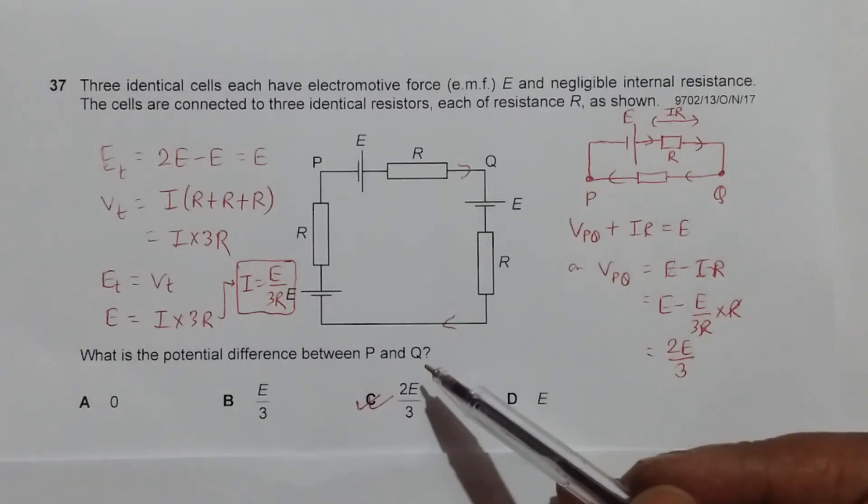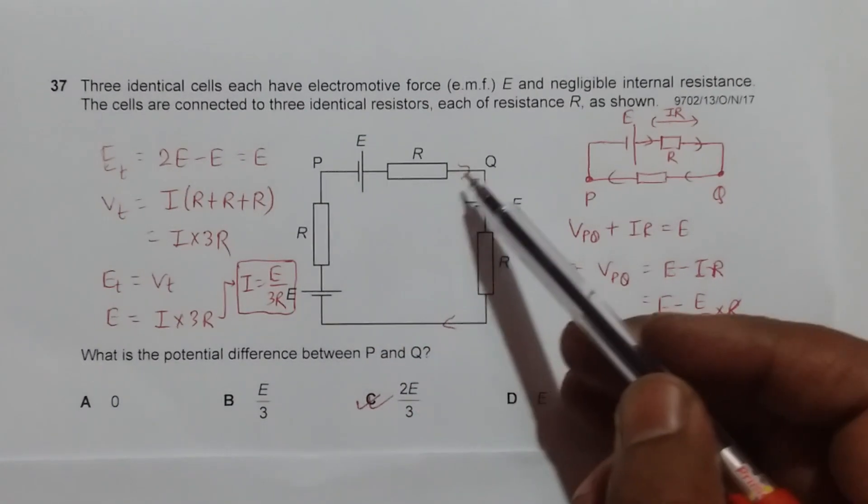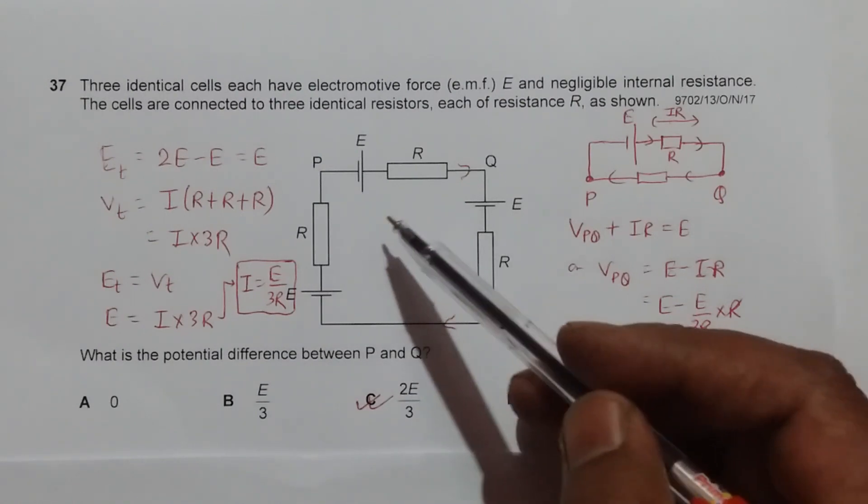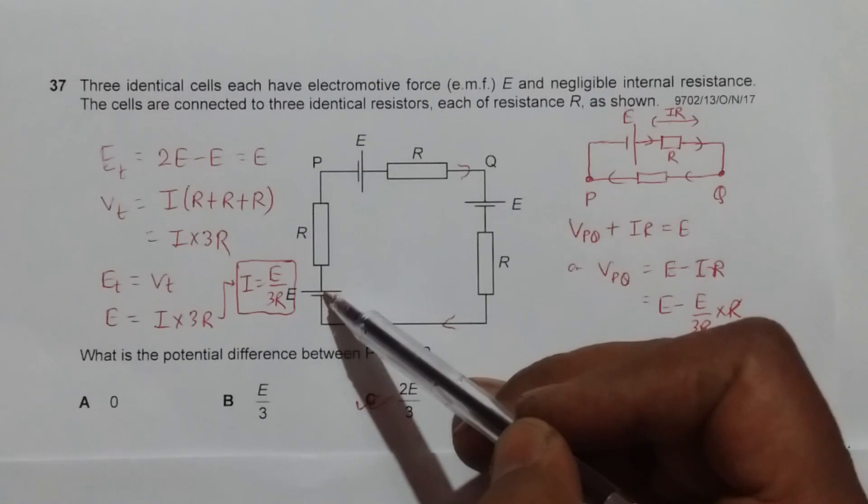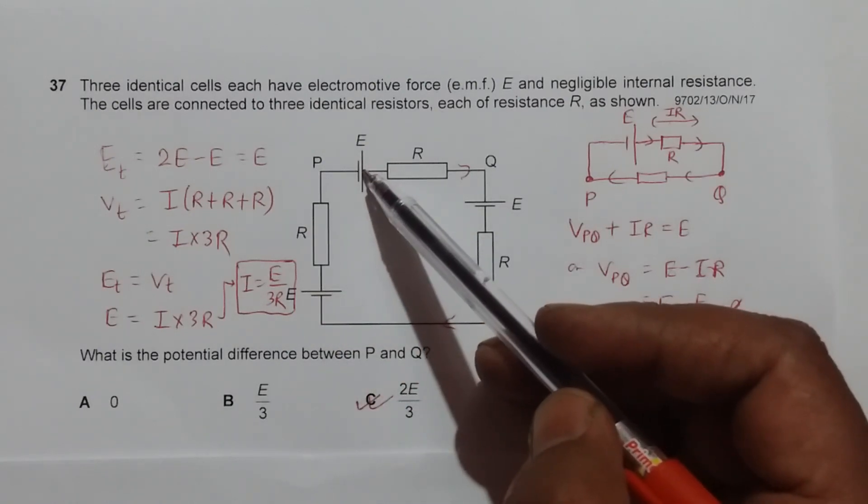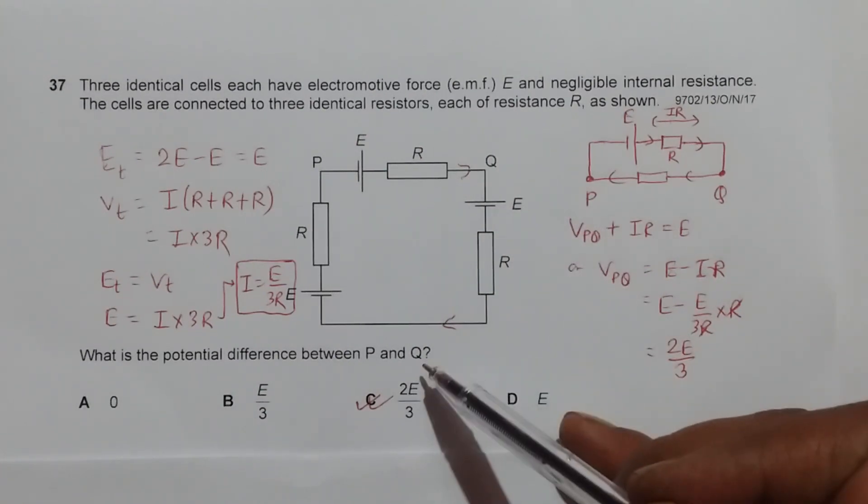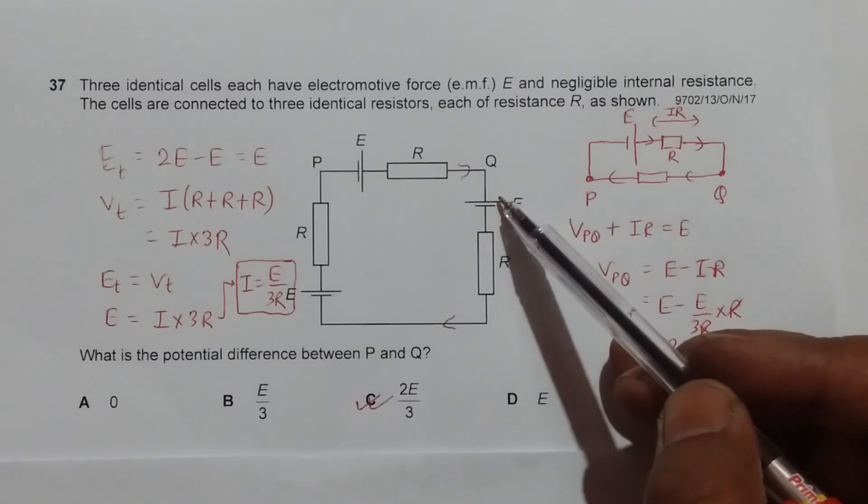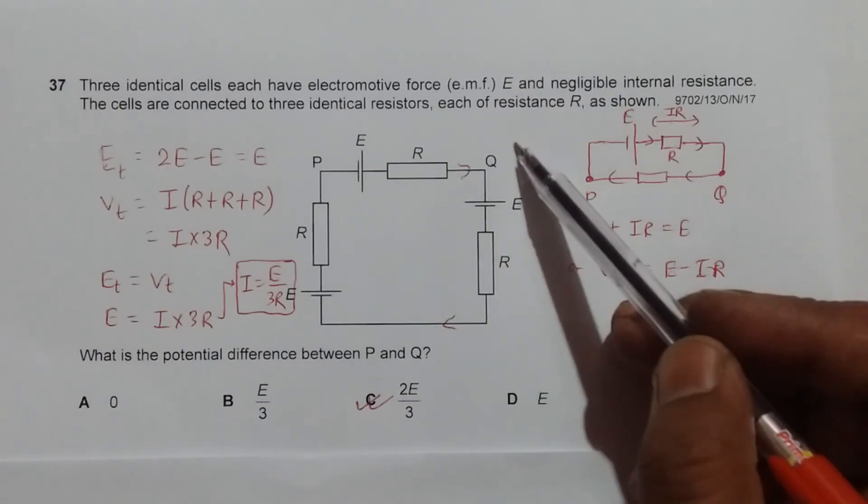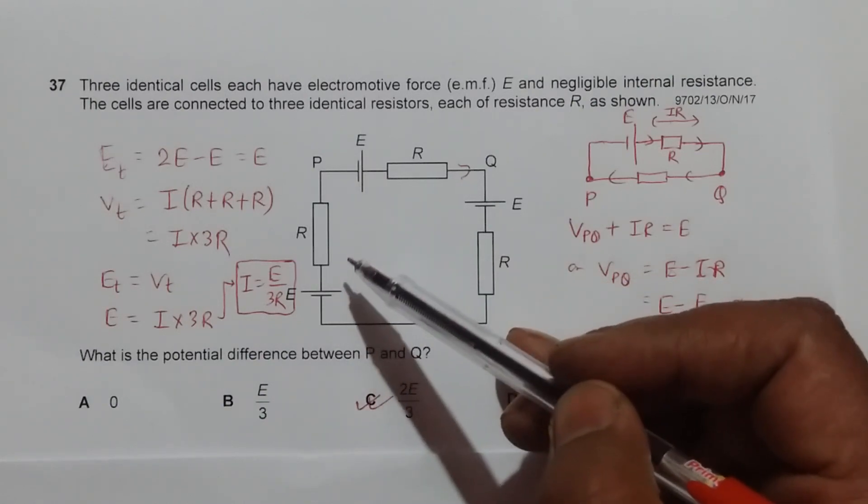We have to find the potential difference between points P and Q. Before that, let us remember that this E and this E are trying to flow the positive charges in clockwise direction like this, but this E is trying to flow charges in anticlockwise direction like this.